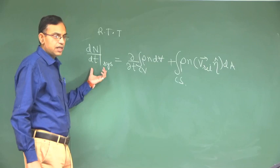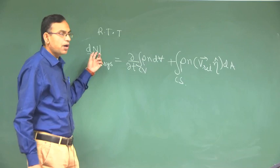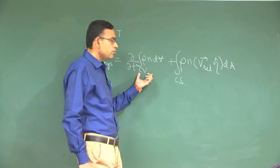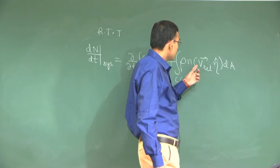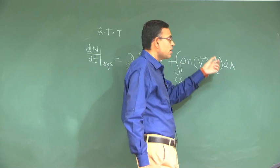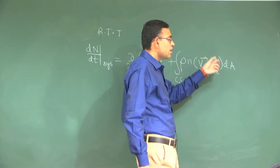To summarize, this is the equation. This is the rate of change with respect to the control mass system, where capital N is the extensive property. This is the rate of change with respect to the control volume, where small n is the corresponding intensive property. And this is the flow across the control volume carrying with it some property N.